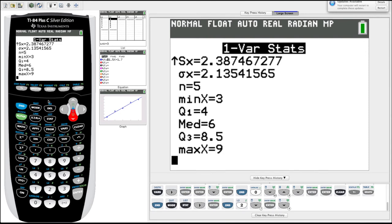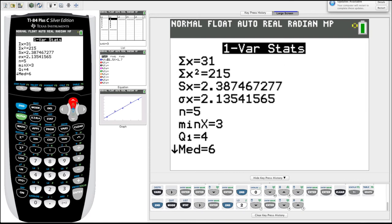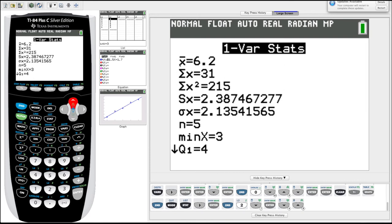So this gives, so one var stats gives us, we scroll back up, gives us a whole bunch of information, important information. Our average, our standard deviation for sample and population, number of data points, quartiles, etc.